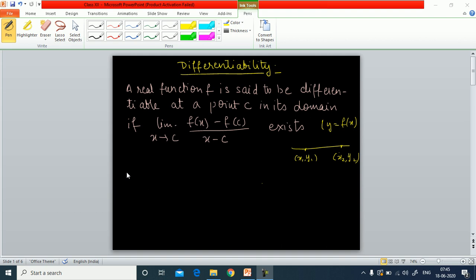But similar thing we noticed while defining its geometrical interpretation. If we have a line on which two points, neighboring points are given to you, say the coordinates of the neighboring points be x1 y1 and x2 y2.